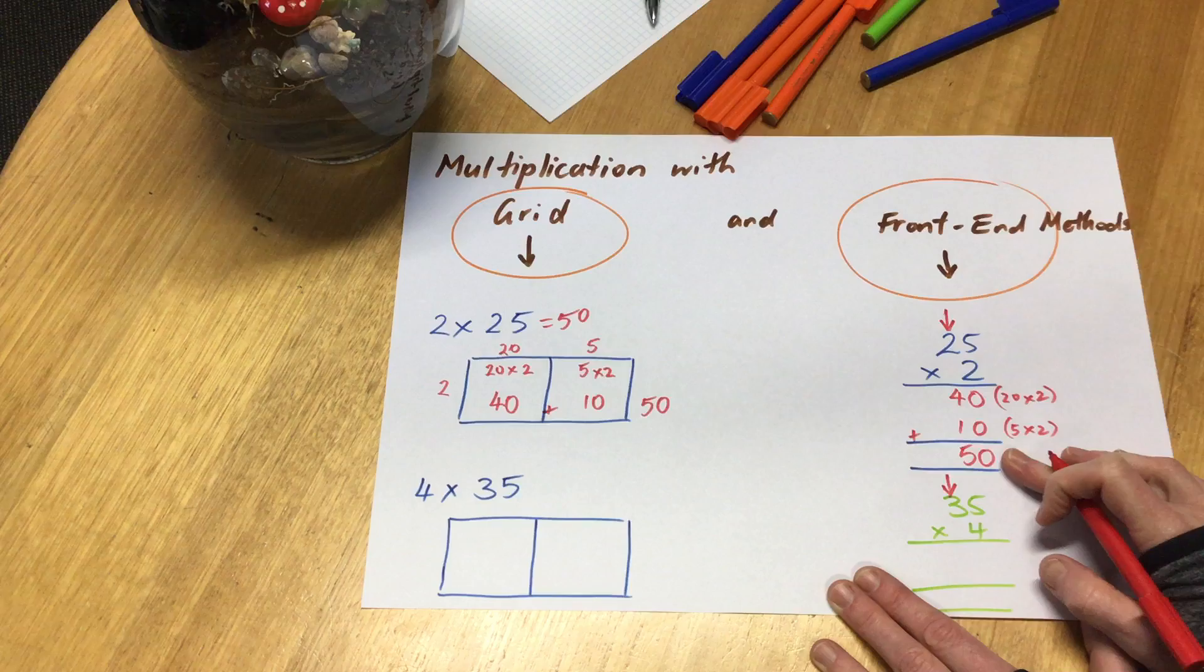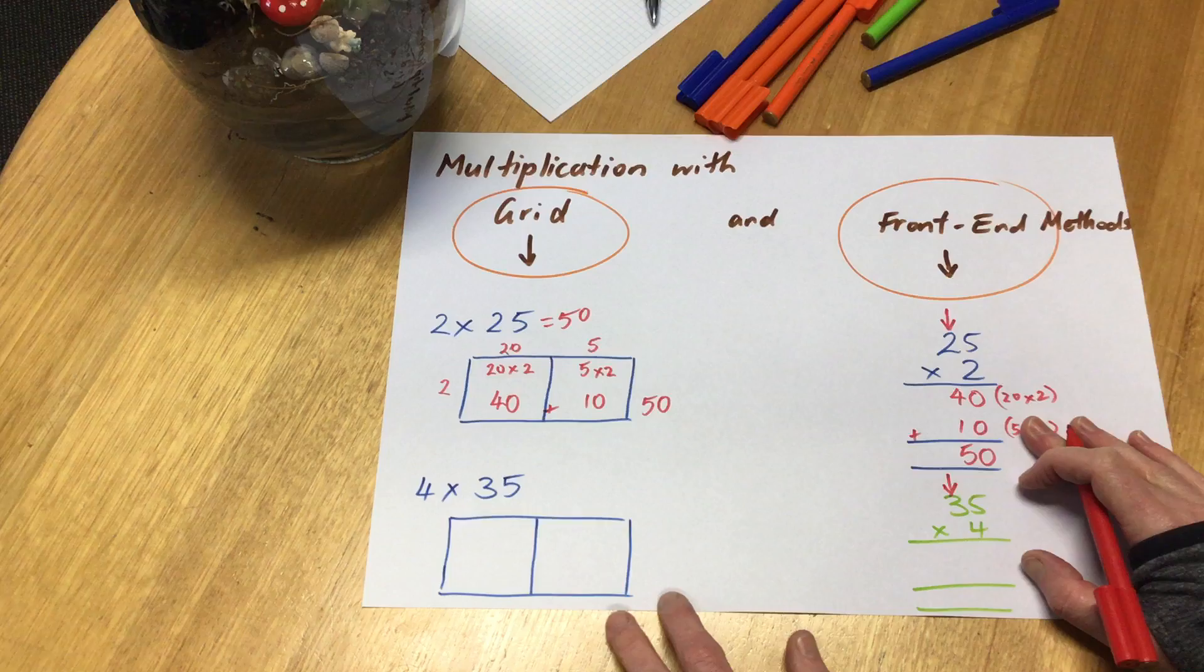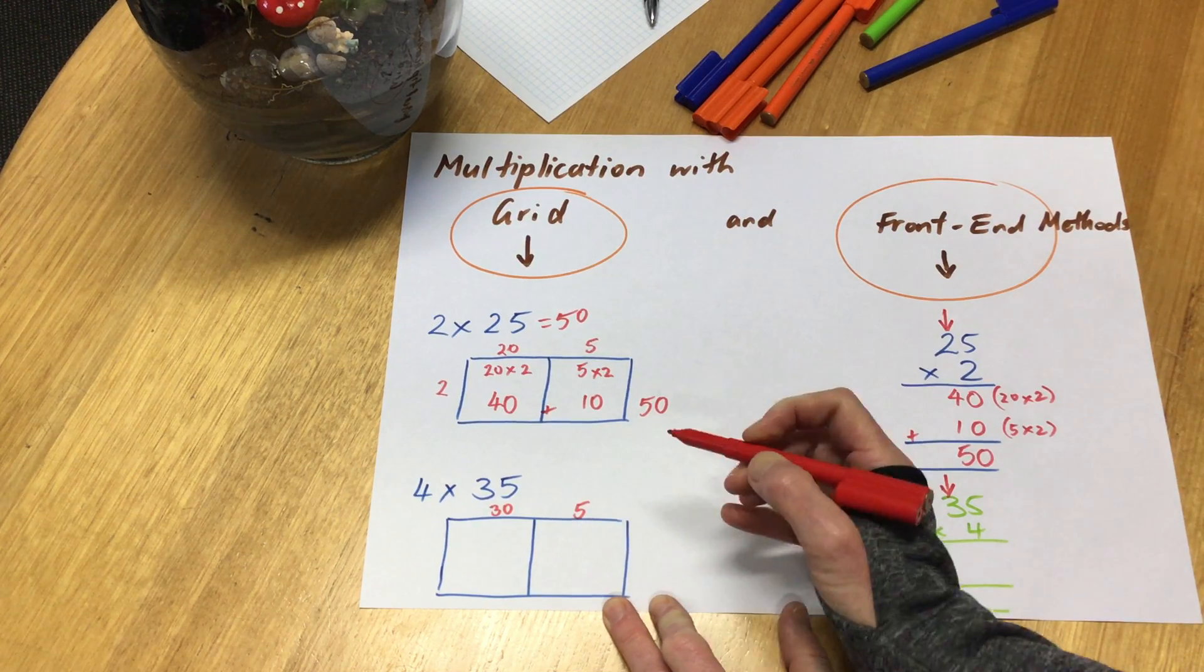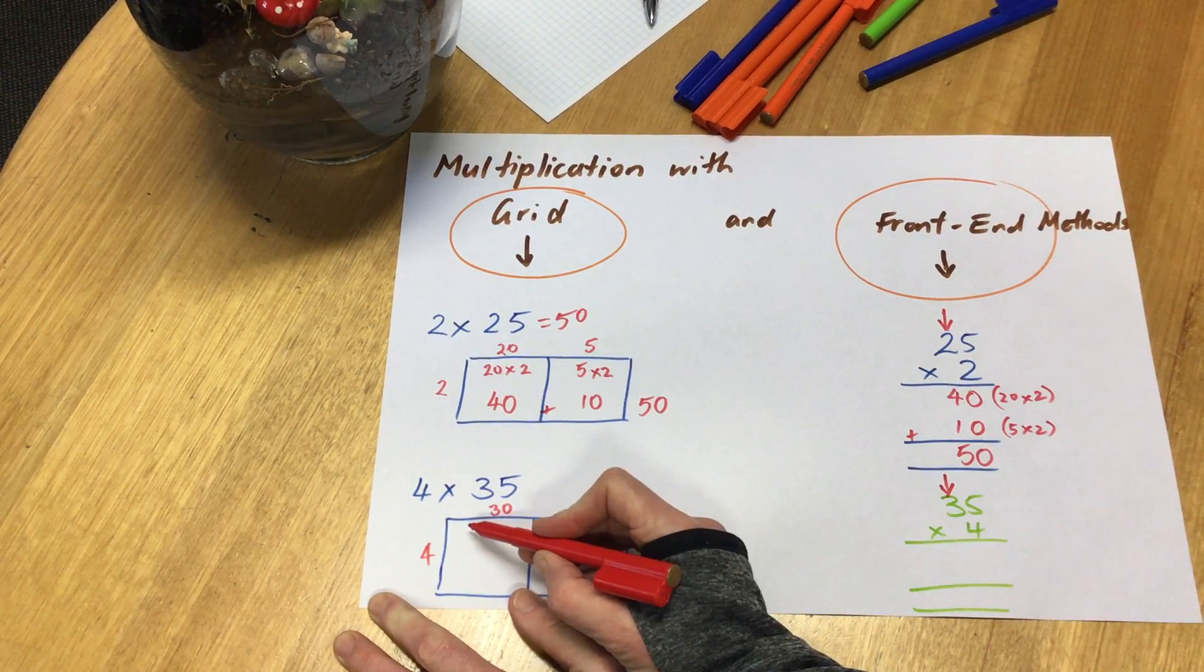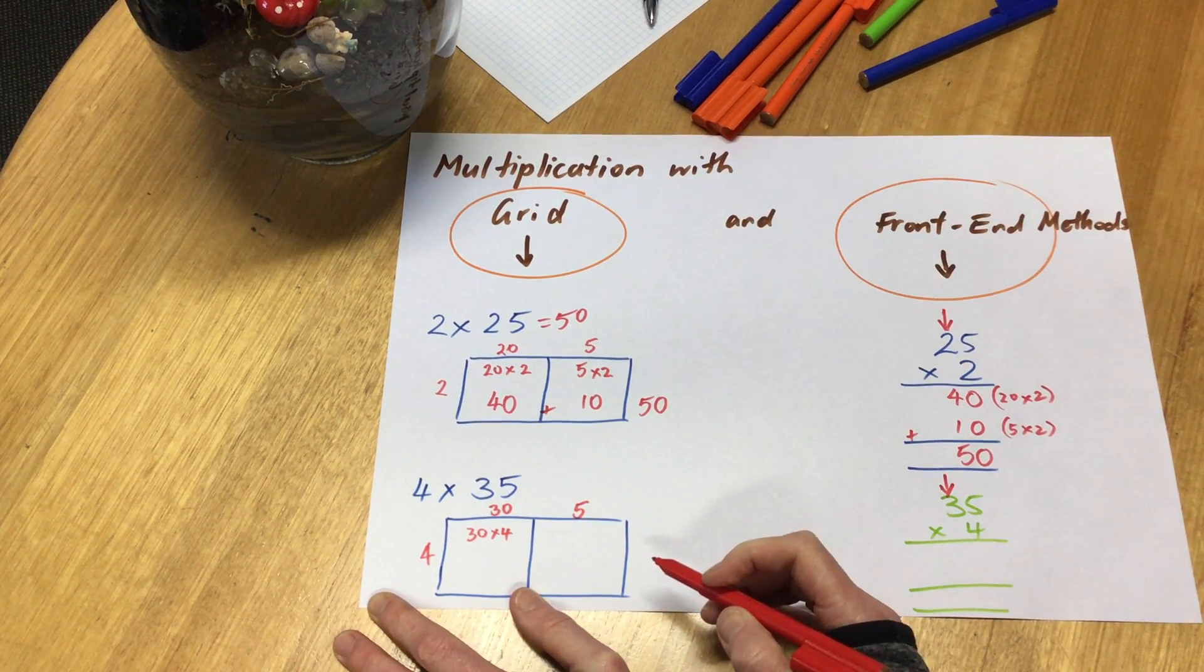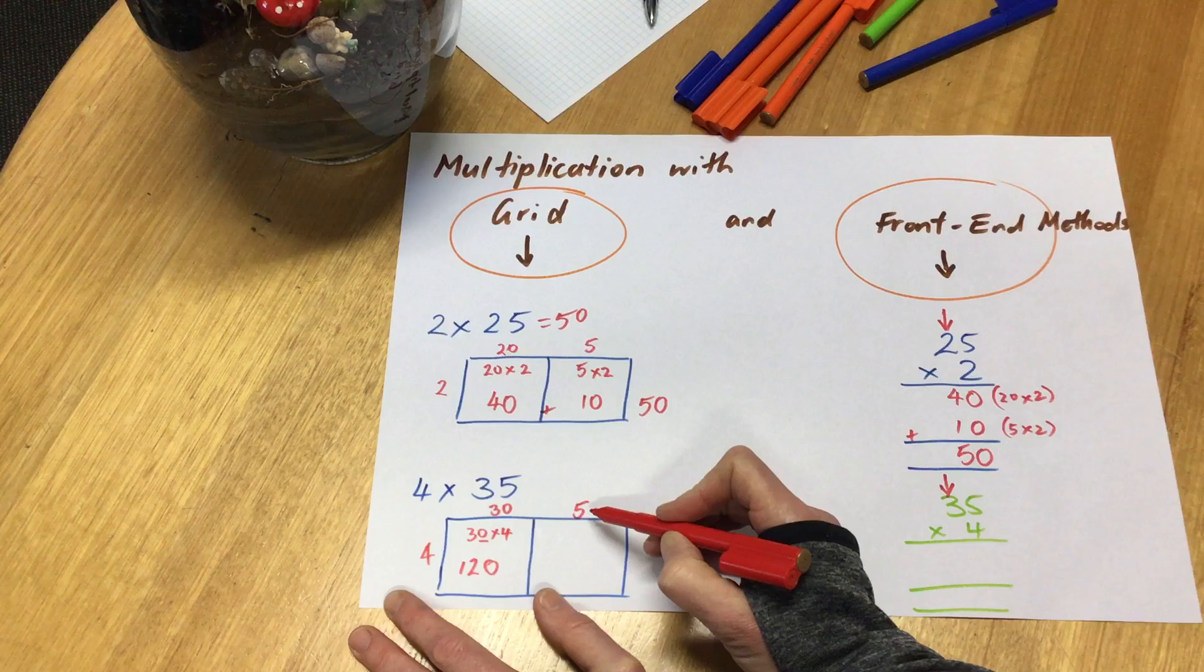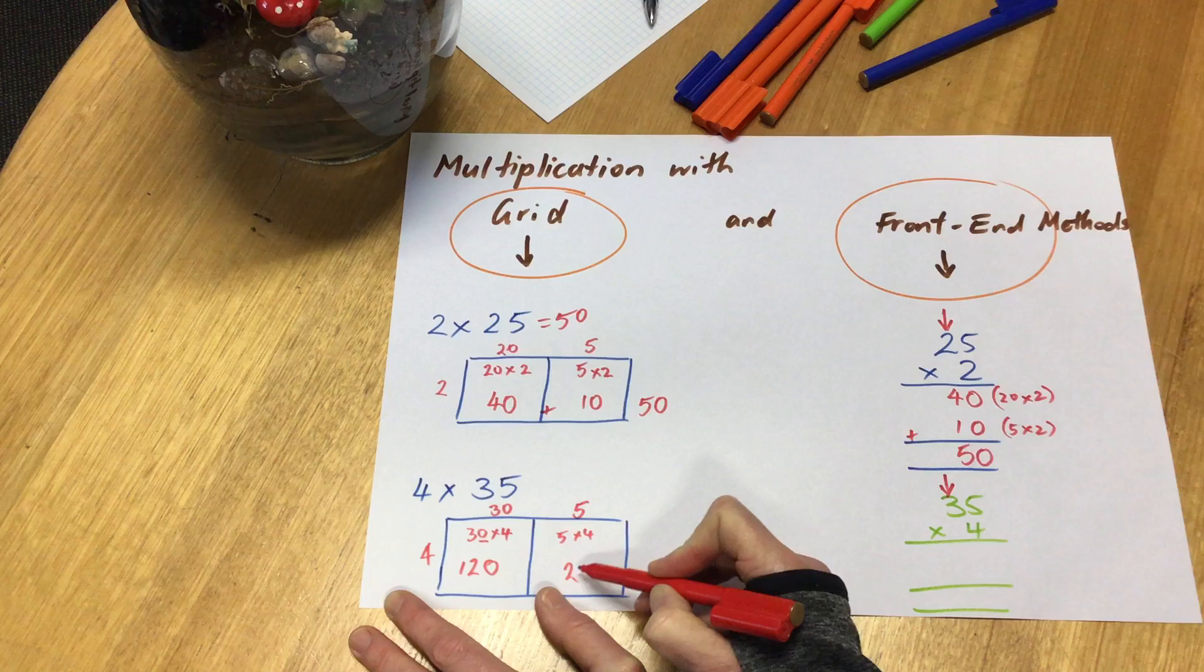Let's have a look over here, 4 times 35. I'm going to number split by my place value. Here I've got 4 times 30, or 30 times 4, whichever way you want to write it. 4 threes is 12, and I'm talking about 12 tens. 5 fours is 20. 120 plus 20 more is 140.